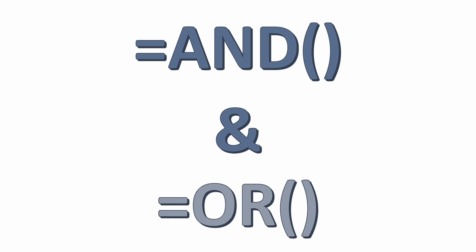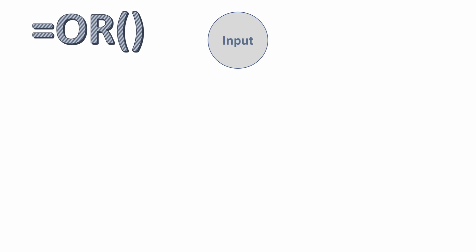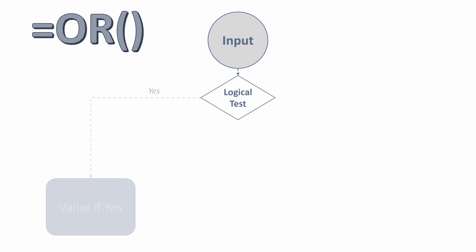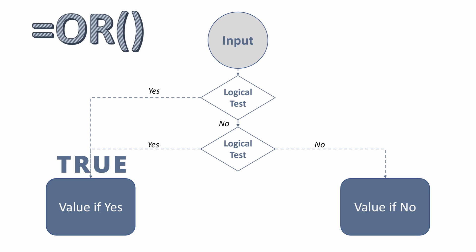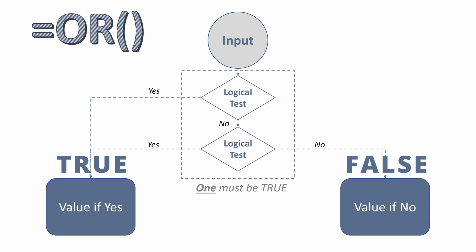Let's look at the OR statement. The OR statement is slightly different. It has the same logical test structure, but will return your value of true if any of your logical tests return true. So with the first logical test, if that is yes, we return the value of yes or true. If that is no, we do another logical test. If this is true, we return that same value of yes. If that is also no, then we return the value of no or false. Takeaway: only one of your logical tests has to be true with an OR statement to return your value of true.